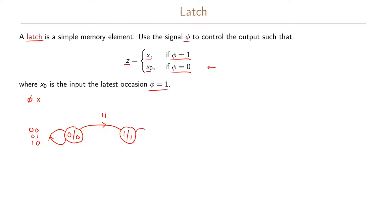In the one state, we continue to output a one as long as phi is zero, and also when phi is one and x is one. When phi is one and x is zero, we go back to the zero state and start outputting a zero. This state transition graph exactly implements the behavior defined for our latch.